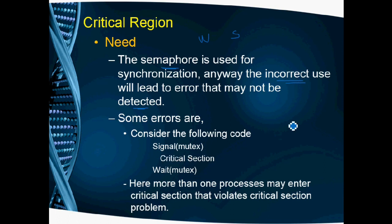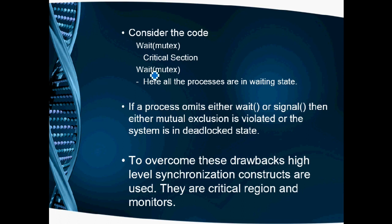In the first example, we have three lines with mutex. We should use wait first, then critical section, then signal. But here wait and signal are reversed - signal of mutex first, then critical section, then wait. So the first process P1 enters, then P2 can also enter the critical section. Then the third process can also enter critical section. So more than one process may enter critical section, which violates the mutual exclusion condition. This is one error.